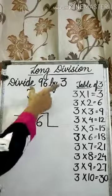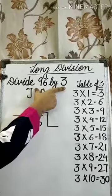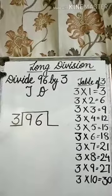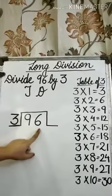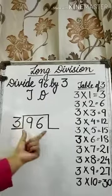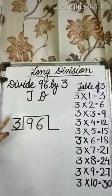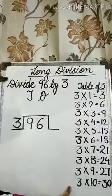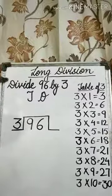First of all, we need to arrange these numbers in this way. Here, the dividend is 96 and the divisor is 3. So, we have to divide 96 by 3. By writing the table of 3, it will be easy for you to divide.